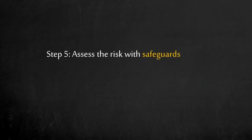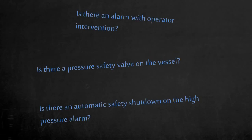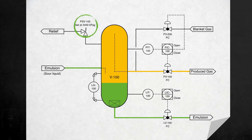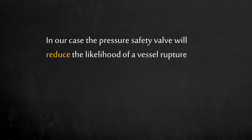Step 5: The focus is now to reduce the risk by reducing the probability of the consequence. Look for safeguards and assess the risk with safeguards applied. Is there an alarm with operator intervention? Is there a pressure safety valve on the vessel? Is there an automatic safety shutdown on the high pressure alarm? There is a pressure safety valve, PSV-100, designed for this blocked flow case. The pressure safety valve will reduce the likelihood of a vessel rupture, but will not eliminate the risk since it can potentially fail.